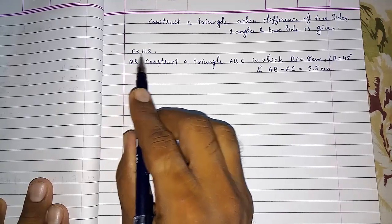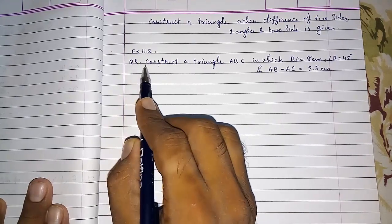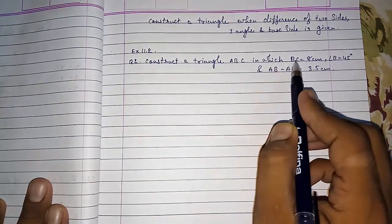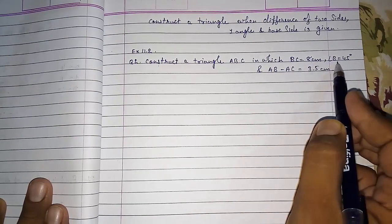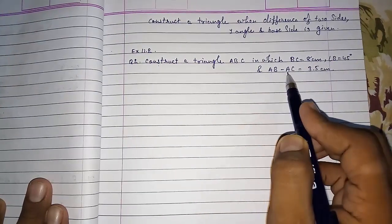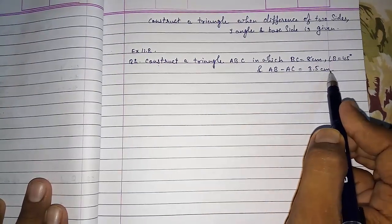This is from exercise 11.2 NCERT. Construct a triangle ABC in which BC is equal to 8 cm, angle B is 45 degrees, and AB minus AC is equal to 3.5 cm.